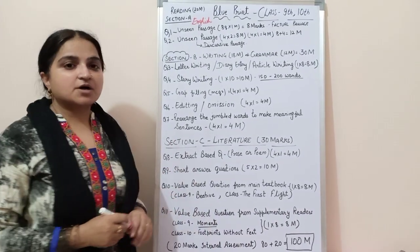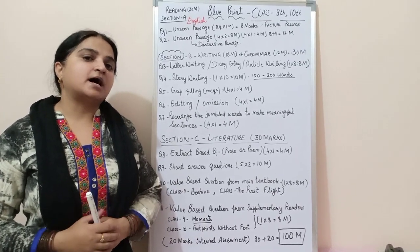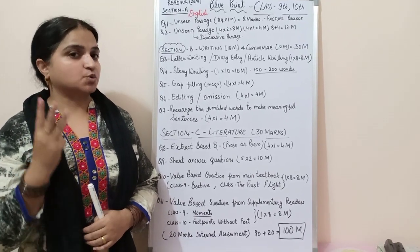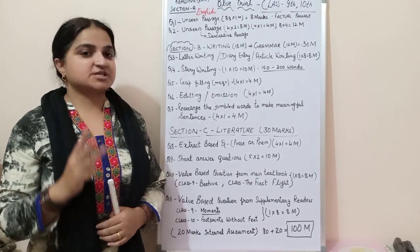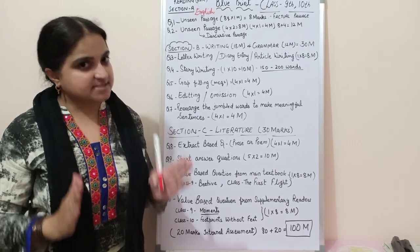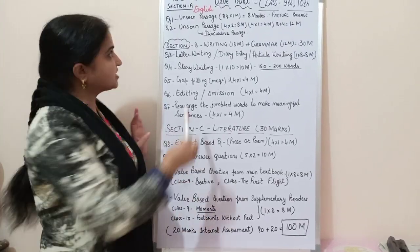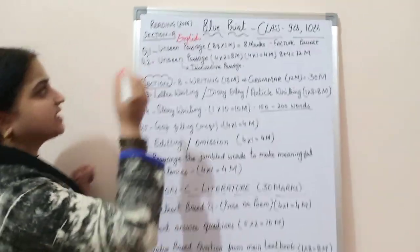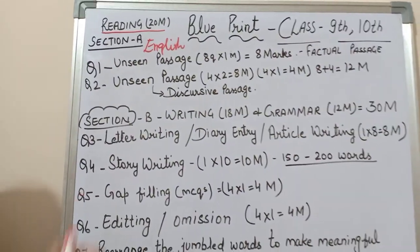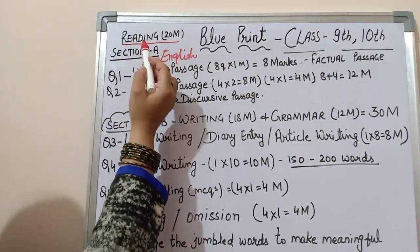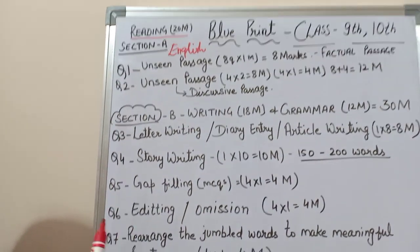There are mainly three sections in your question paper: Section A, Section B, and Section C. Section A is Reading, and it carries 20 marks.